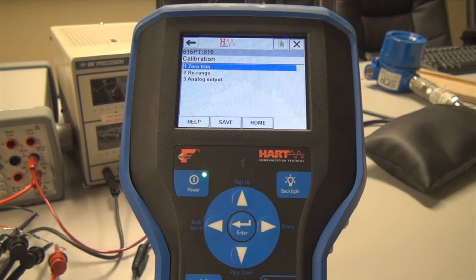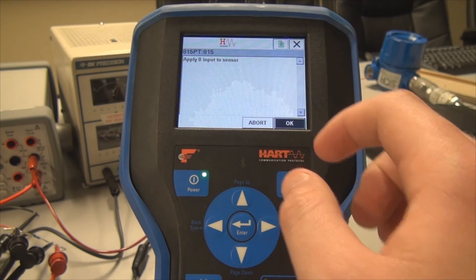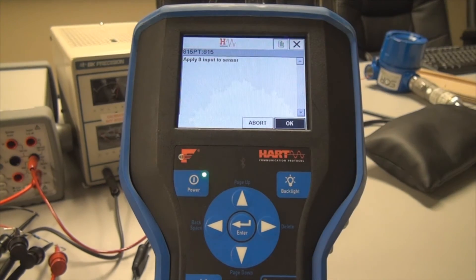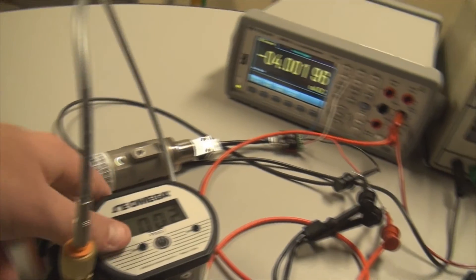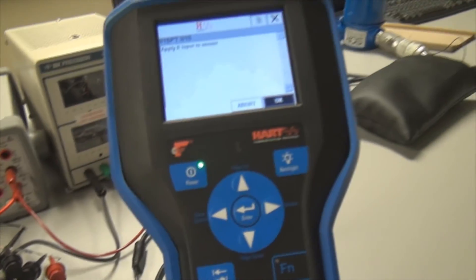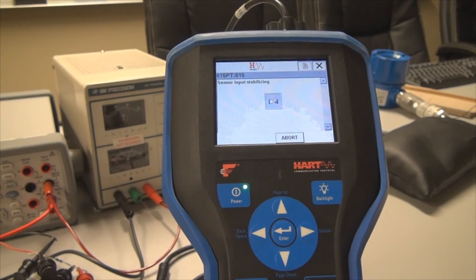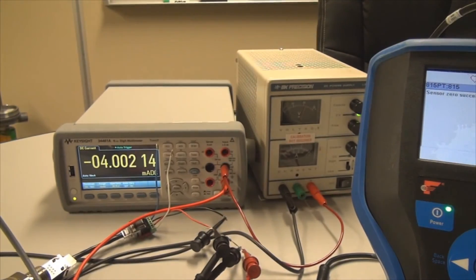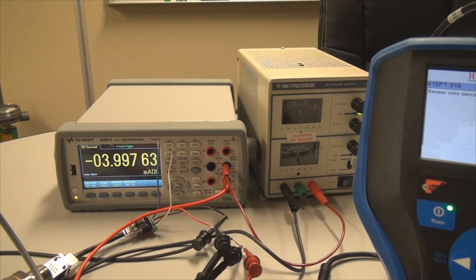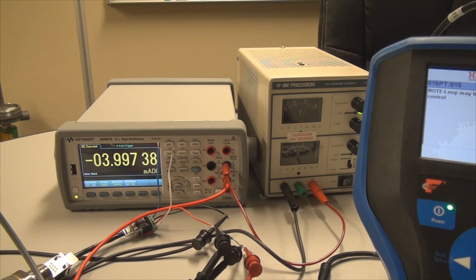To calibrate it, you can do a zero trim. Hit OK. And then it asks you to apply zero input pressure. So what we're going to do here is apply zero pressure, which is what it is now. We're going to hit OK. And you can see it's already trimmed down to zero to a more accurate zero pressure reading.